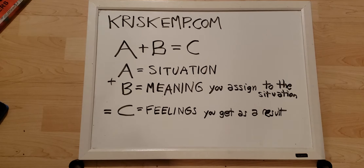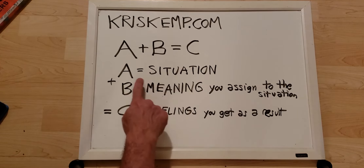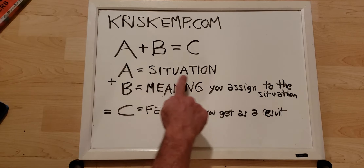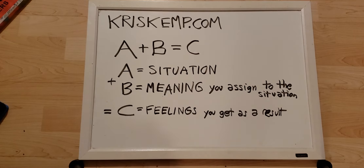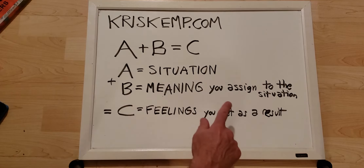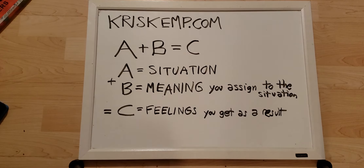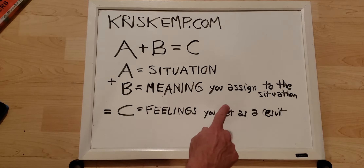Let's talk about relationships. Perhaps you're in a situation where you're in a relationship and your partner is pulling away. He or she is not available — that's the situation. A, the situation, is you're in this relationship, you really care for this person, and this person is pulling away. B is the meaning you assign to the situation. You could assign many different meanings to this.